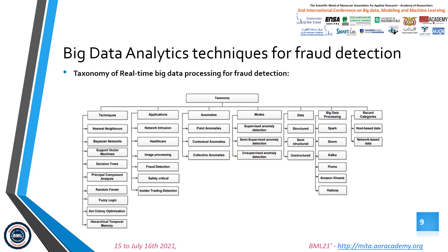Let's move to the taxonomy of real-time data processing for fraud detection. This taxonomy is classified into different categories: techniques, application, anomalies, models, data, big data processing, and record categories. For the techniques, we have examined six major anomaly detection techniques: nearest neighbor, Bayesian network, support vector machine, decision tree, random forest, and others. For the application, we have listed major application scenarios in real-time big data processing for anomaly detection, such as network intrusion and healthcare image processing for detection.